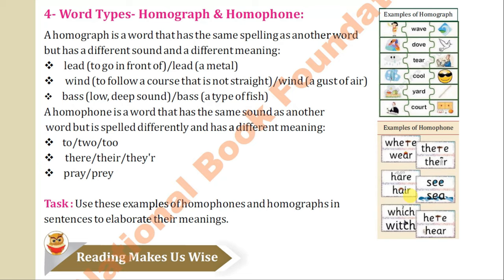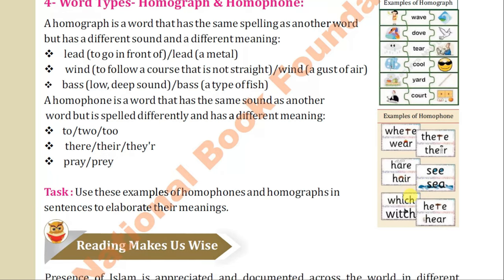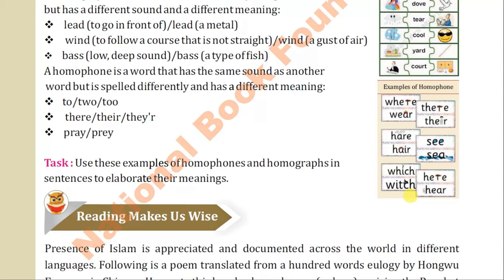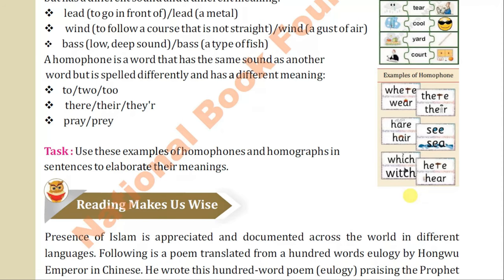Next we come to homophone. A homophone is a word that has the same sound as another word but is spelled differently and has a different meaning. Examples: to, two, too — and there, their, they're.